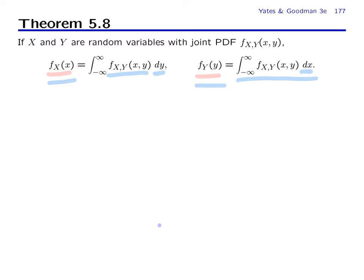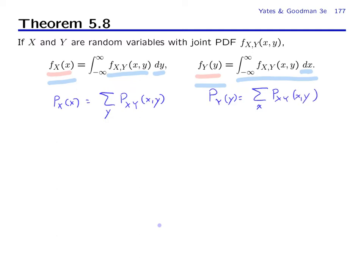In the discrete case, we had a joint PMF and found the marginal by summing over all y for a fixed x, and similarly found the PMF of y by summing the joint PMF over all possible x for a fixed value of y. This is exactly the same — the summation of the joint PMF has simply been replaced by an integral of the joint PDF.